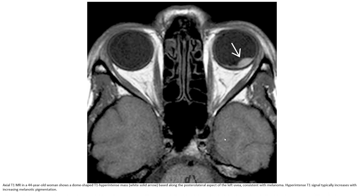Let's see this first case. On the axial T1 MRI in a 44-year-old woman, a dome-shaped T1 hyperintense mass is seen along the posterior lateral aspect of the left uvea, consistent with melanoma. The high T1 signal intensity corresponds to increased melanocytic pigmentation.